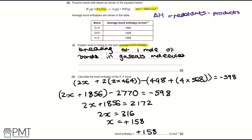For the 3 marks: first mark for setting up the reactants minus products equation equalling ΔH; second mark for reaching 2x = 316; third mark for x = +158 kJ mol⁻¹.